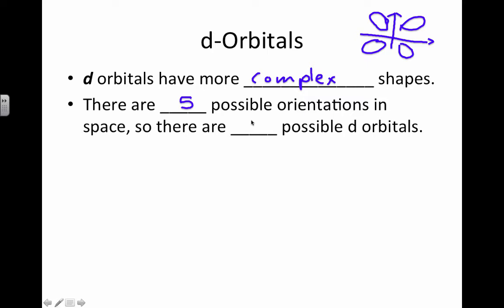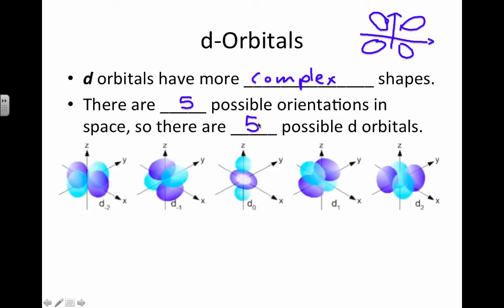So that gives us five possible orbitals, because there's five possible orientations. Here's a picture of them all. This is the one that helps me remember what d orbitals are like, because it's got this little donut shape, d is for donut, around the middle. And then the other regions where we find the electrons are in the quadrants of our graph, not along the axes.